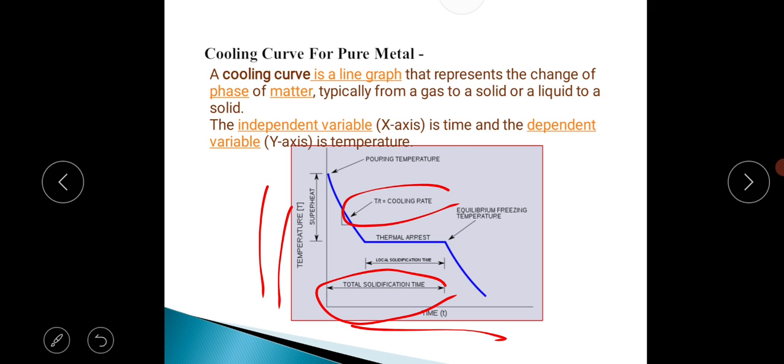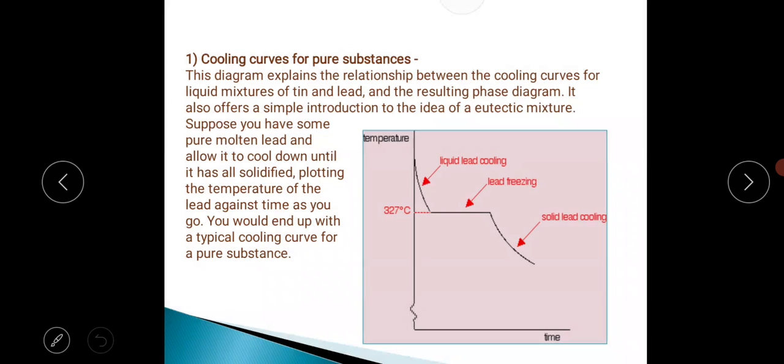Cooling rate, pouring temperature. Cooling curves for pure substances: This diagram explains the relationship between the cooling curve for the liquid mixture of tin and lead and the resulting phase diagram. It also offers a simple introduction to the idea of the eutectic mixture. Suppose you have some pure molten lead and allow it to cool down until it has all solidified, plotting the temperature of the lead against time as you go. You would end up with a typical cooling curve for pure substance. This is lead freezing, solid lead cooling, and liquid lead cooling at 327 degrees Celsius.